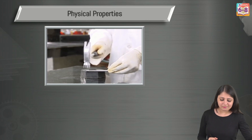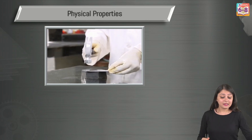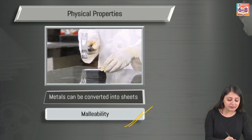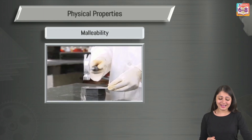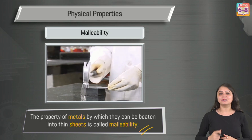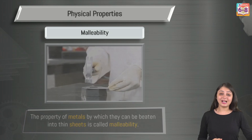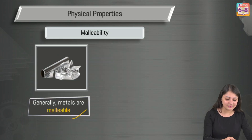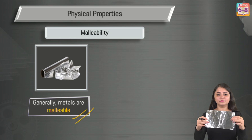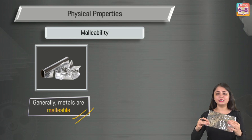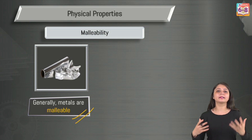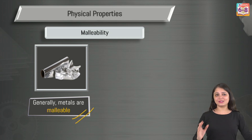Here we see a hammer being used to beat a metal into sheets. This property is called malleability — the property of metals to be beaten into sheets. Metals are generally malleable. You've all seen aluminum foil used for packing food; it's been beautifully beaten into a sheet. So metals can be beaten into sheets — start noticing the metals around you this way.